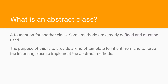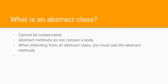First of all, what is an abstract class? An abstract class is a foundation for another class, just like an interface. Some methods in abstract classes are already defined and must therefore be used. The purpose is to provide a kind of template to inherit from and to force the inheriting class to implement the abstract methods. An abstract class cannot be instantiated — you cannot create an object from it immediately. It is only a pattern for a new class.